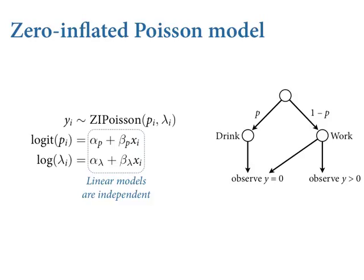So we have two linear models, if you choose. You can just estimate p and lambda, but if you have predictors you'd like to make the probability of drinking and the rate of manuscript production conditional on, then you need two link functions and two linear models. The linear models can be completely different from one another with different parameters. The example I've given has two different intercepts, two different beta coefficients, and a common predictor X — like how sunny it was outside, or how much cider is in the cellar.